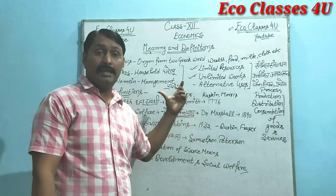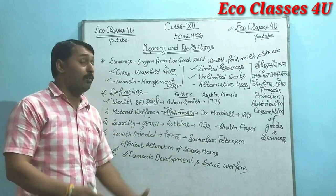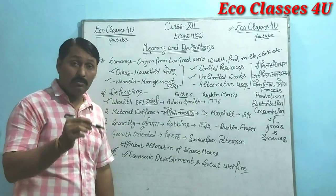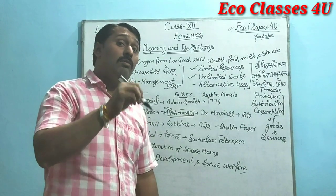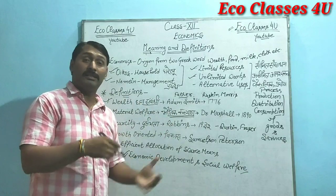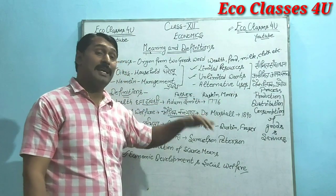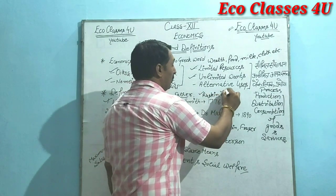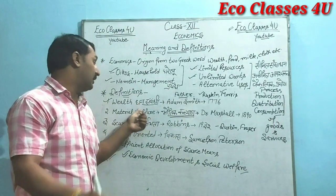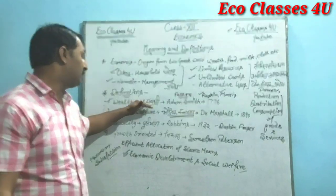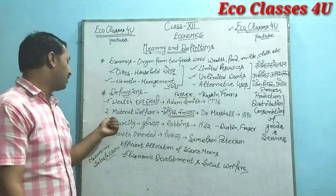Professor Adam Smith — hume yaad rakhna hai kyunki ye father of modern economics hain. Aur inki jo book thi, that is 'An Inquiry into the Nature and Causes of the Wealth of Nations'. Is book mein unhone wealth ke baare mein likha tha — what is wealth, how the volume of wealth can be increased, and how wealth can be invested or saved. Lekin inki jo definition thi, that was criticized by Ruskin and Morris — unhone kaha ki this definition is only related with wealth, no other activity takes place in this definition.